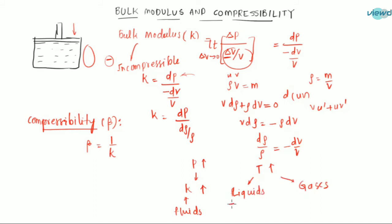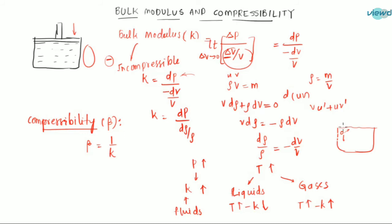For the effect of temperature: as temperature increases, bulk modulus decreases for liquids. This happens because for liquids, as temperature increases the molecules move farther from each other, the density of the liquid decreases, so it becomes more easily compressible than before, which means the bulk modulus decreases.